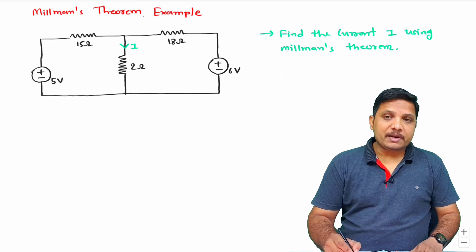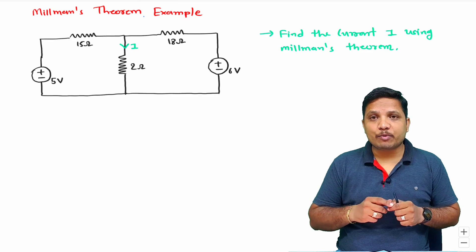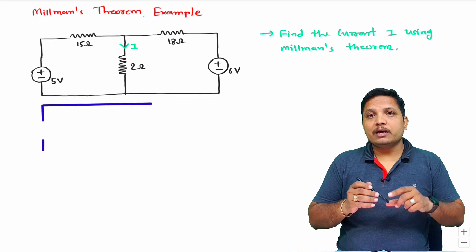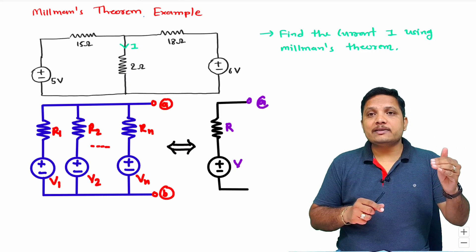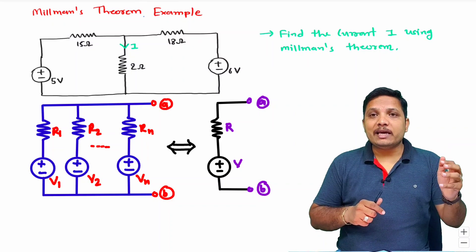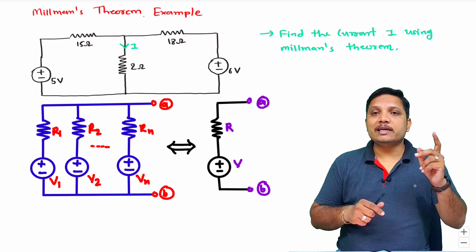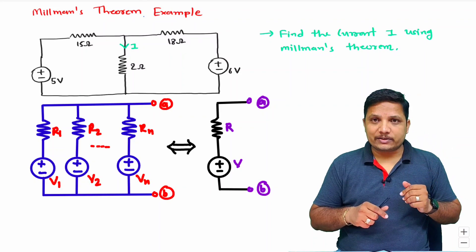If you see my previous video based on Millman's theorem, that explains if you have parallel combination of series of resistance and voltage source, then that will be equivalent to series combination of resistance and equivalent voltage.